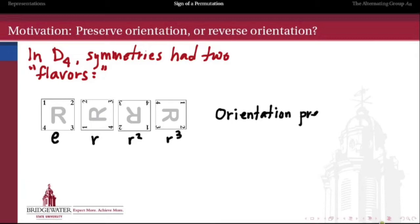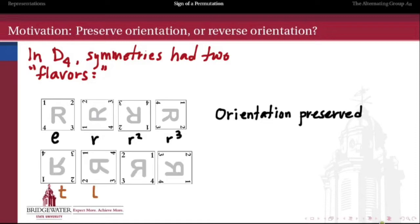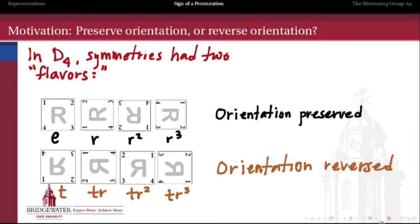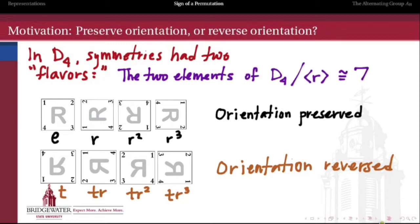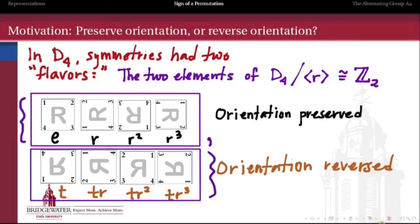We had the orientation-preserving flavor, which consisted of the rotations: e, R, R squared, and R cubed. And then we had the orientation-reversing transformations: T, TR, TR squared, and TR cubed. These two flavors correspond exactly to the two elements of the quotient group D4 quotiented out by the rotations, which we saw was isomorphic to Z mod 2.